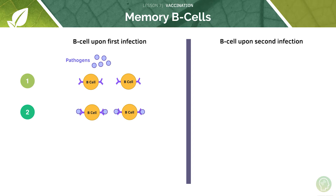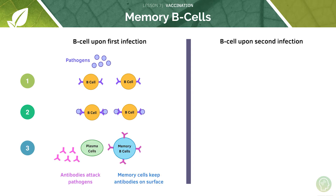An antigen is a specific protein that is unique to this particular pathogen that the B cell binds to. It allows for the identification of a foreign body within the human body. This then results in massive production of antibody, which then leads to elimination of the infection.